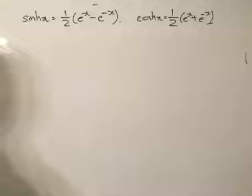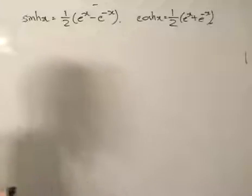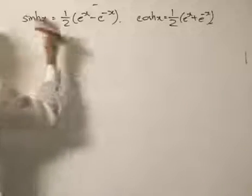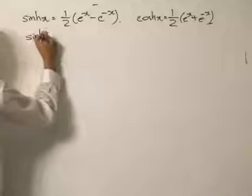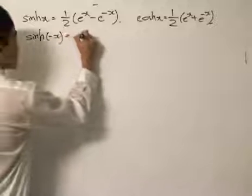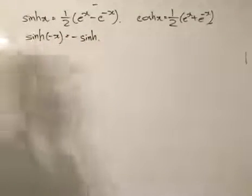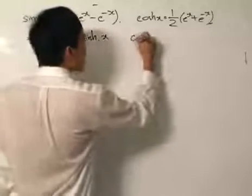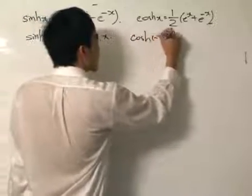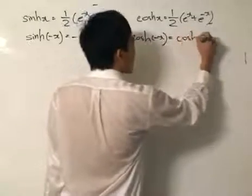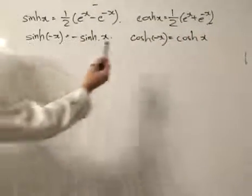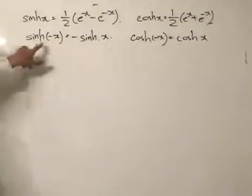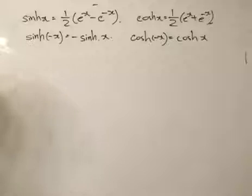It also follows that, like trigonometric functions, sinh of minus x equals minus sinh x — you can bring out the minus sign. And cosh of minus x equals cosh x — the cosine function can absorb the minus sign. So the cosh function is even, and the sinh function is odd.